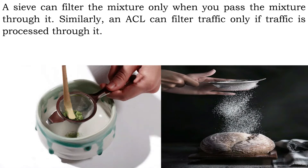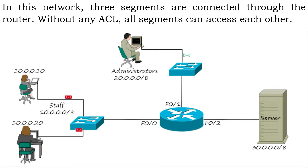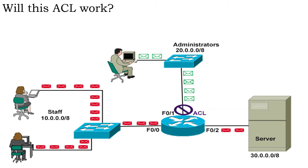Let's take an example to understand how location affects ACL. In this network, three segments are connected through the router. Without any ACL, all segments can access each other. Now the administrator wants to prevent the staff segment from accessing the server segment. For this, he created an ACL and applied it to the F0/1 interface. Will this ACL work?